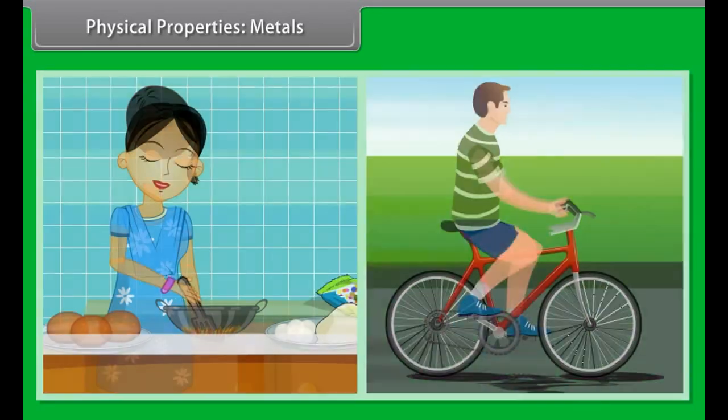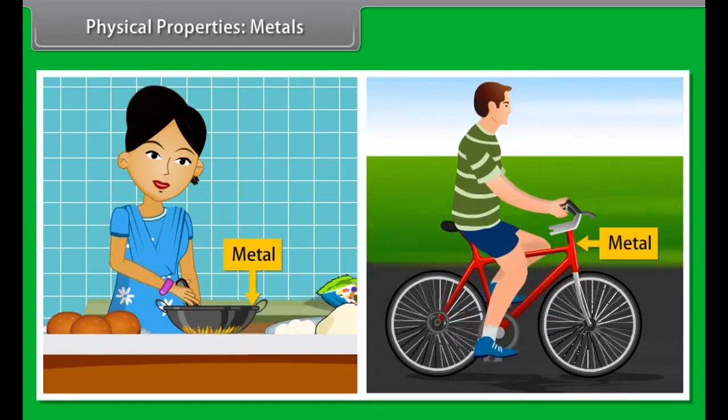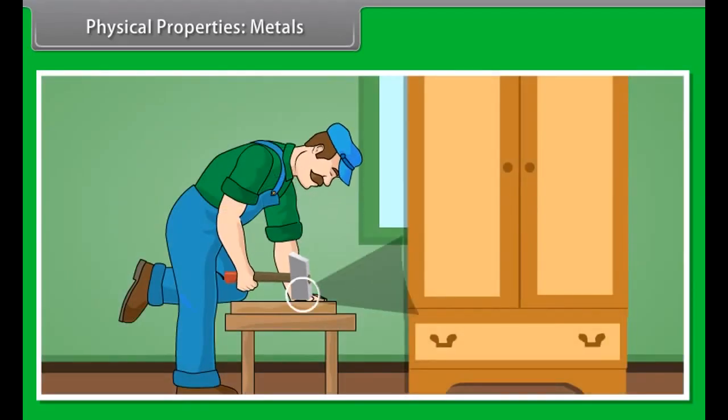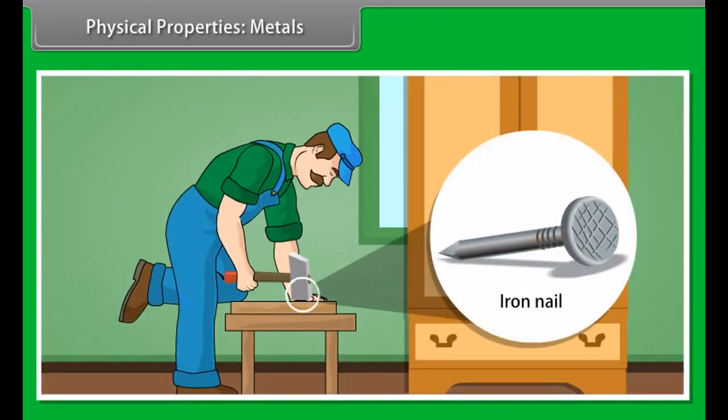Physical properties: Metals. You come across a lot of metals and non-metals in your day-to-day life. For example, the hammer that you use to fix nails is a metal. The nail made of iron is also a metal. Let us look at the physical properties of metals.